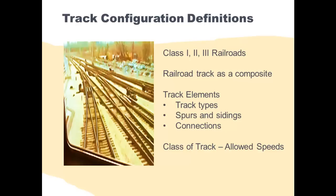In the next webinar, we're going to take that information and the terrain types and combine it to talk about basic operations, where we're going to review the goals for operations, discuss capacity, and how to affect it. Let's get started with some of the track element definitions. Jared, could you go over these? Some of the definitions we'll cover are the railroad track as a composite, the track elements — which include track types, spurs and sidings, and connections — and the class of track relative to allowed speeds.